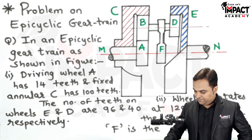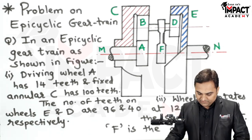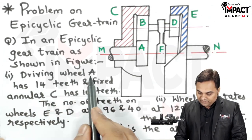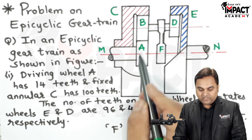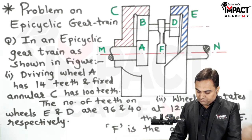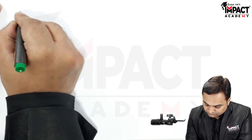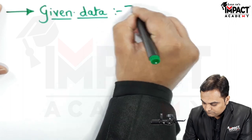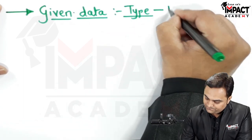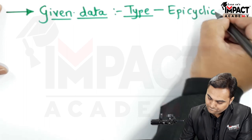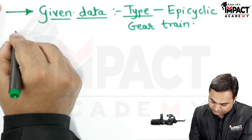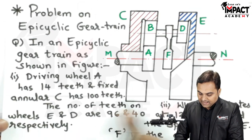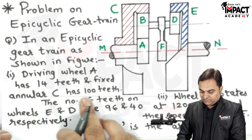Whatever is given here, I will write that in the form of data. In an epicyclic gear train as shown in figure, driving wheel A has 14 teeth. So the number of teeth on wheel A is 14. And fixed annular C has 100 teeth.